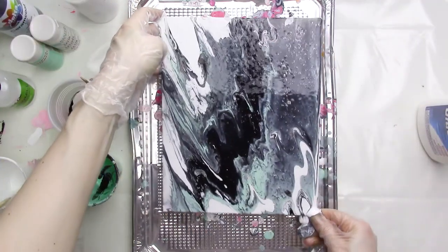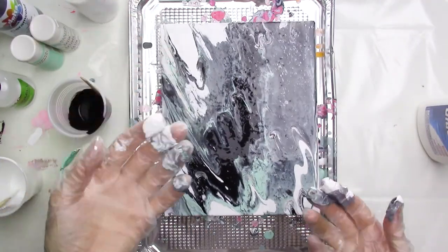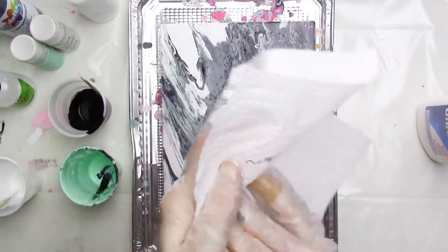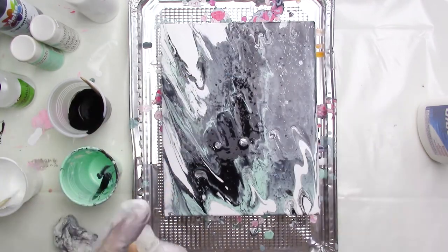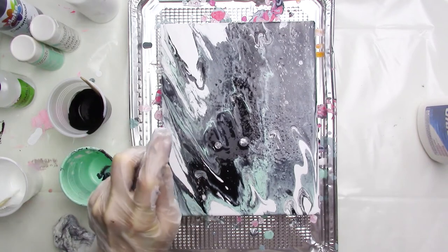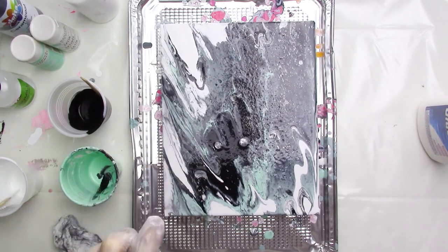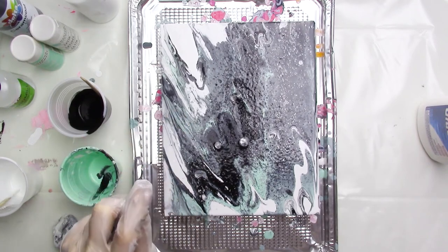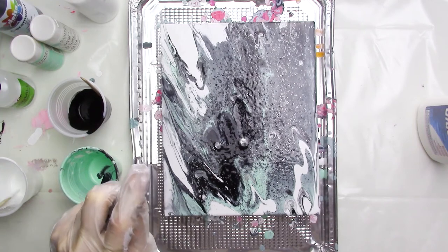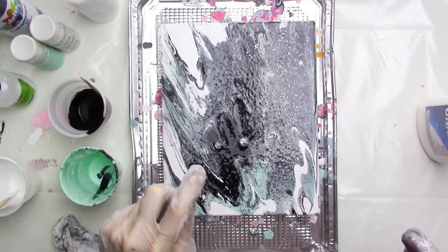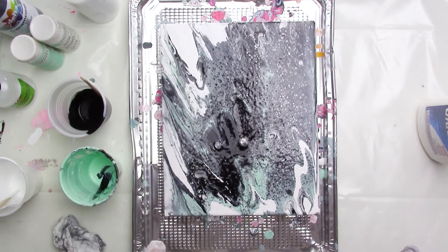Several minutes later, I'm liking how things are looking, but I'm still not seeing much in the way of cells, so I'm going to come in with the isopropyl alcohol spray mister and give the painting several spritzes. And after that, I can see the cells start opening up almost immediately. They're still pretty small, but I'm really liking this look. It gives the painting a great textured look.